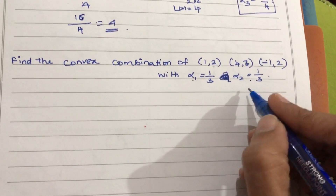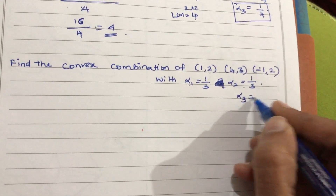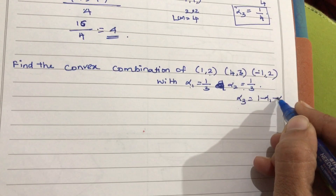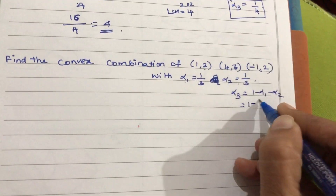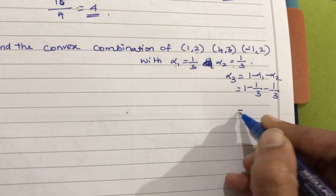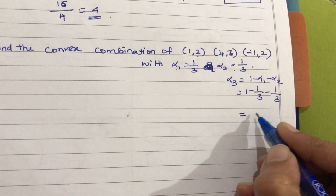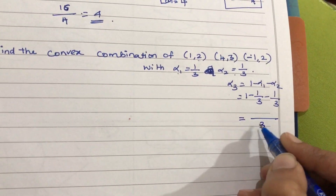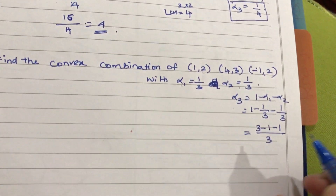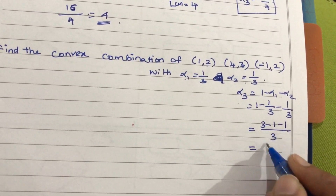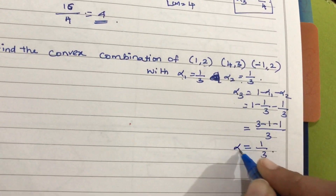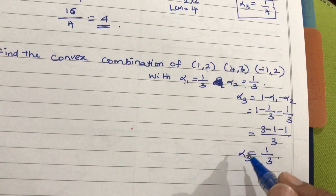This next problem also has 3 points, but again only 2 alphas are given. So take alpha 3 as equal to 1 minus alpha 1 minus alpha 2, which gives 3 minus 1 minus 1 over 3, so alpha 3 is equal to 1/3.